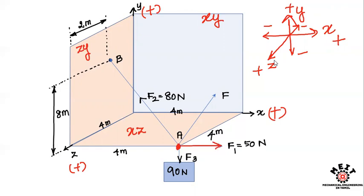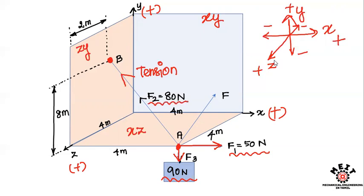F1 acts horizontally, and that value is 50 N. If you look at F3, it acts downward, and that value is 90 N. F2 is like a string connected at B, and the tension along the string is F2, with a value of 80 N.